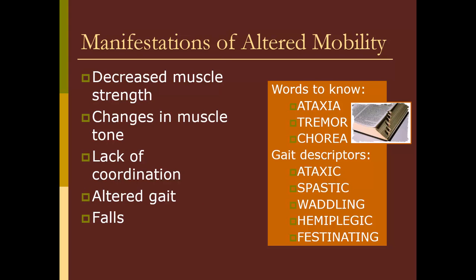When mobility is altered, what are some of the manifestations we see? One is definitely decreased muscle strength — the disuse atrophy that occurs when we are not using our muscles and they begin to decrease in size. We also see changes in muscle tone, which can happen in either direction: we may see hypotonicity or a flaccid change, but depending on the innervation, we may also see spasticity. We can see a lack of coordination as a manifestation of altered mobility, often due to trauma or disease affecting the cerebellum, and it can also be caused by alcohol and some other drugs.